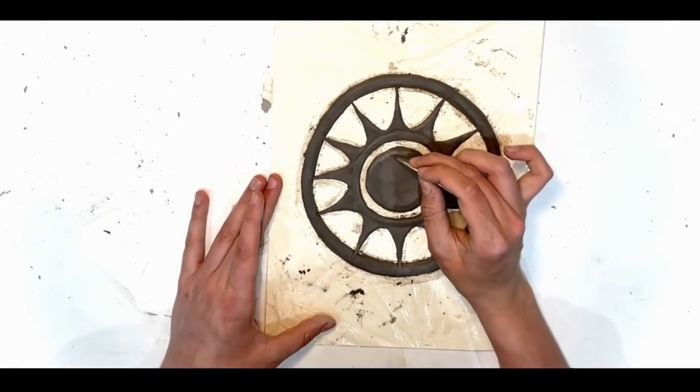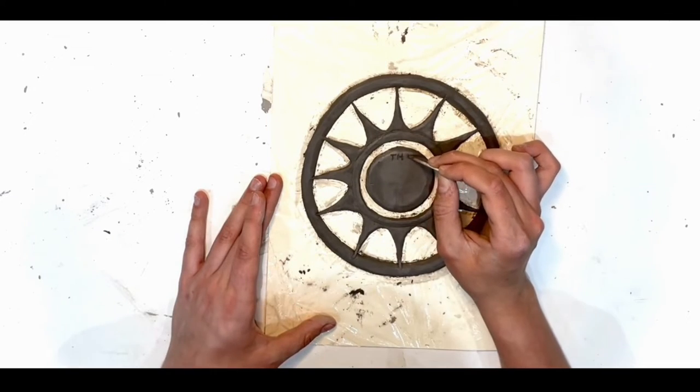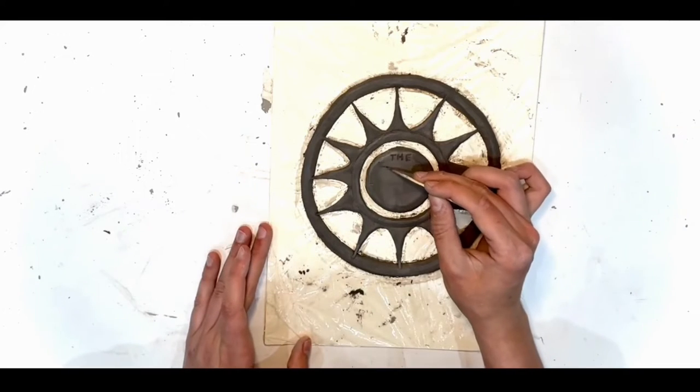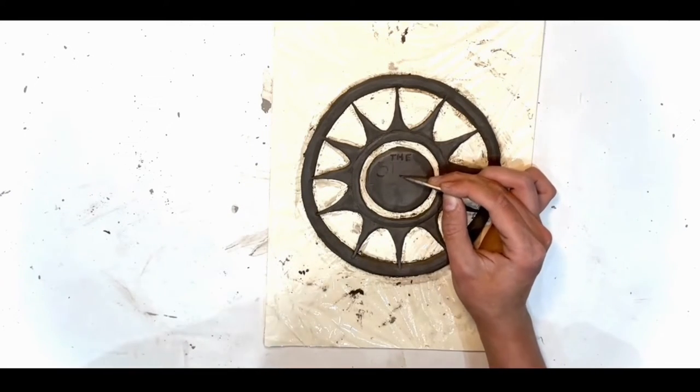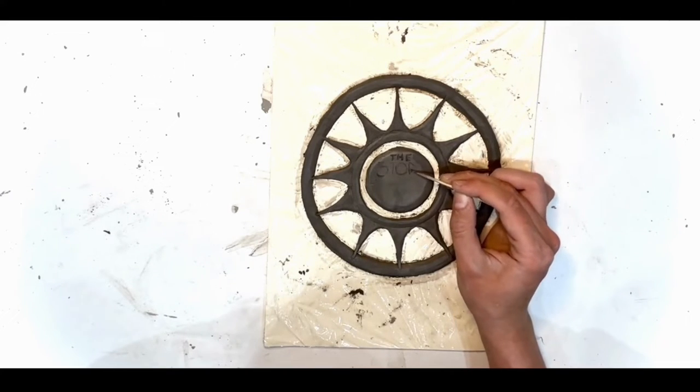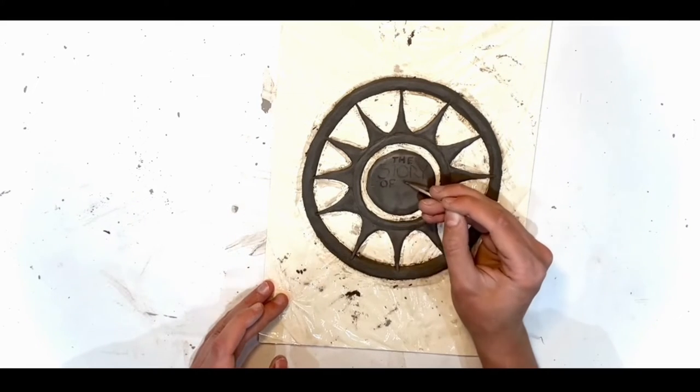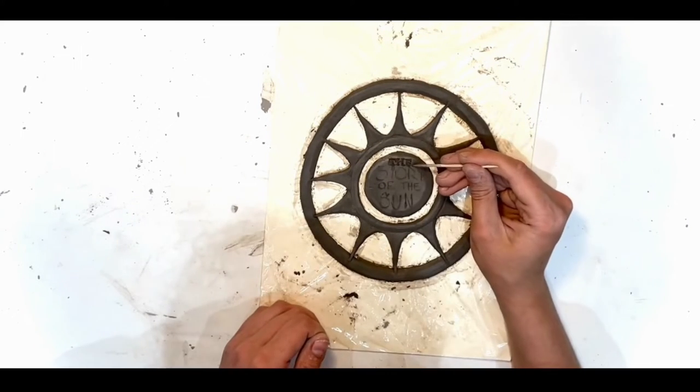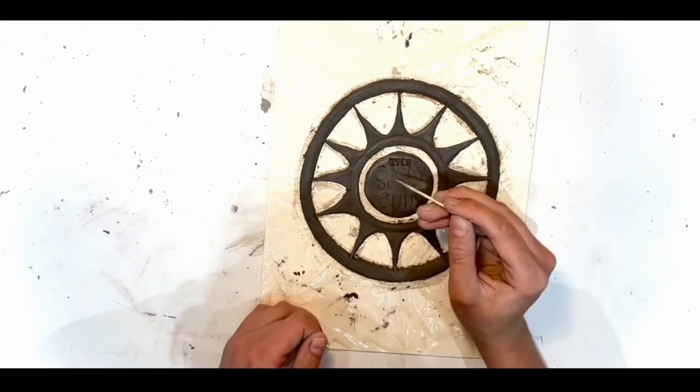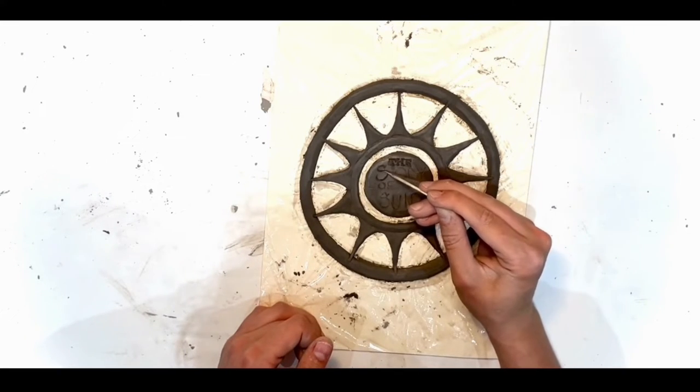Once this is done, you can start to trace out the engraving of your book title in the middle of the sun. Once you're happy with the engraving placement, engrave it into the clay surface deeper so you have a more defined line and can see the lettering clearer. I used a cocktail stick to do this.